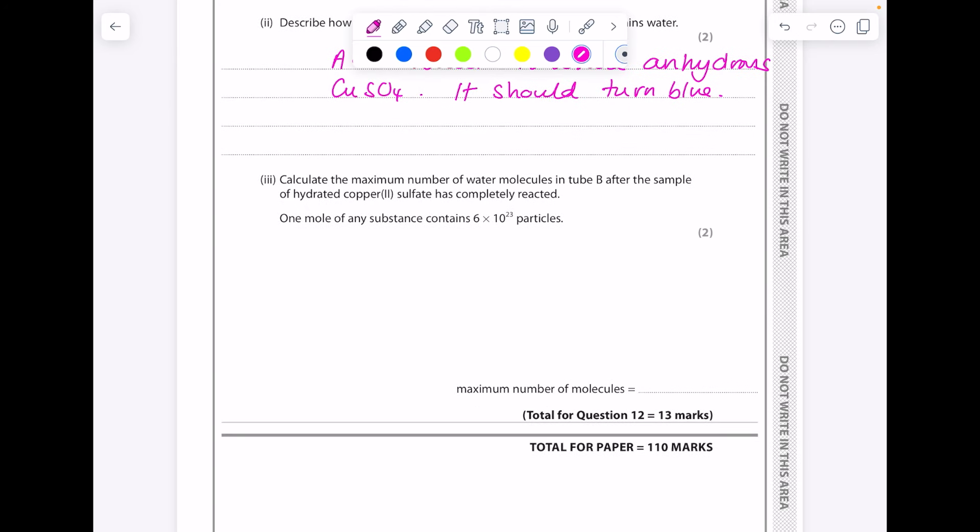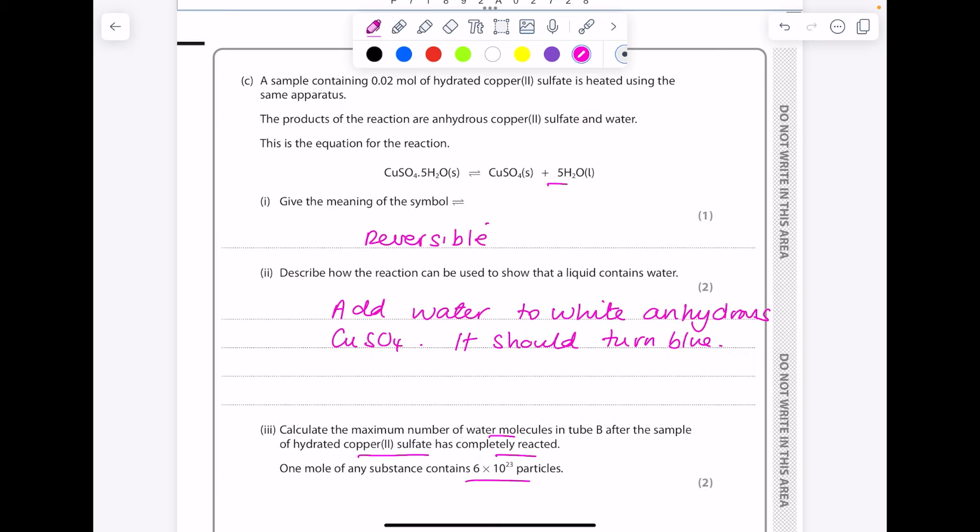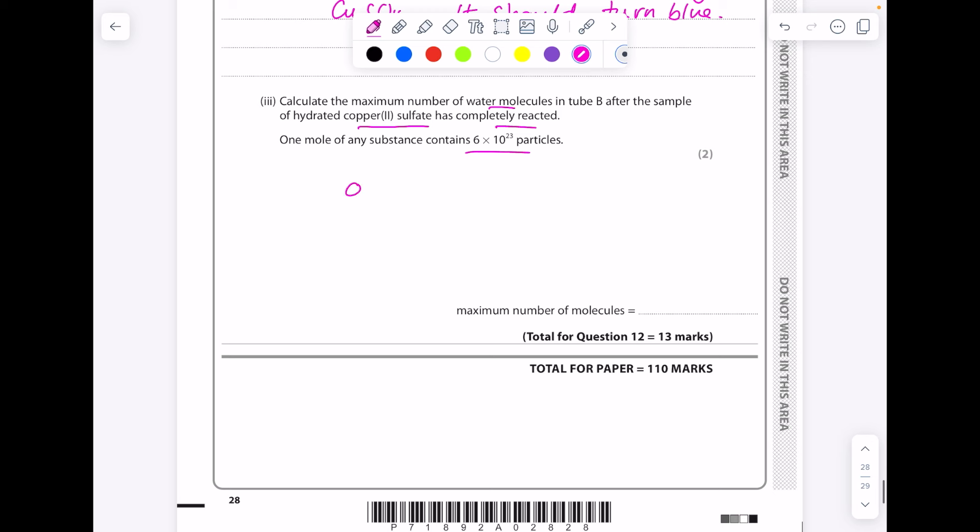Calculate the maximum number of water molecules in tube B after the sample of hydrated copper sulfate has completely reacted. One mole of a substance contains 6 times 10 to the 23 particles. So we know we had 0.02 moles of hydrated copper sulfate. So check the mole connection, it's 1 to 5, so just multiply that by 5 to get 0.1 moles of water being made. And then if one mole of a substance has 6 times 10 to the 23 particles, well, we've only got 0.1 moles. So that's your sum, so the answer is 6 times 10 to the 22.